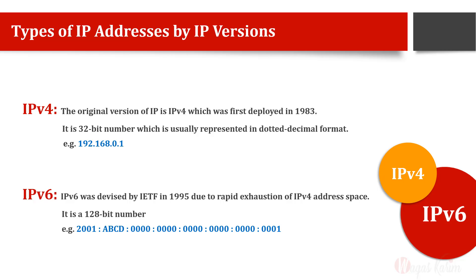IPv6 is not the only method to increase the number of IP addresses. There are other methods as well. For example, NAT — Network Address Translation. We have divided addresses into private and public space so that we can reuse the private address space. That's why in offices and homes the IP address given to our computers usually starts from 192.168 or 10.x. So your private IP address and someone else's private IP address can be the same, but public IP addresses will always be different.